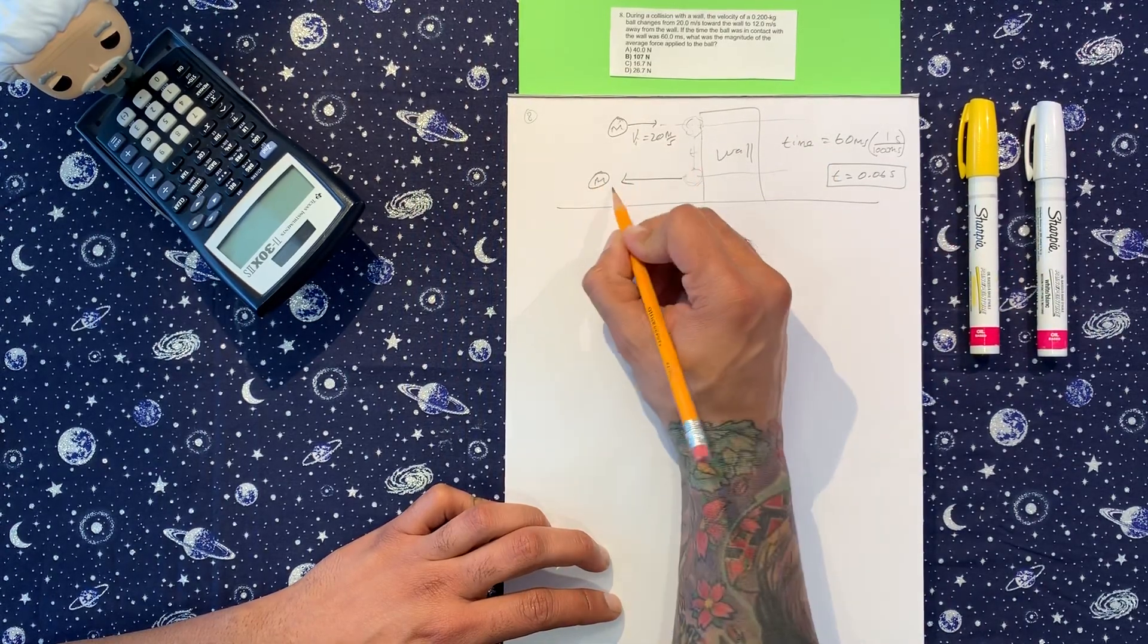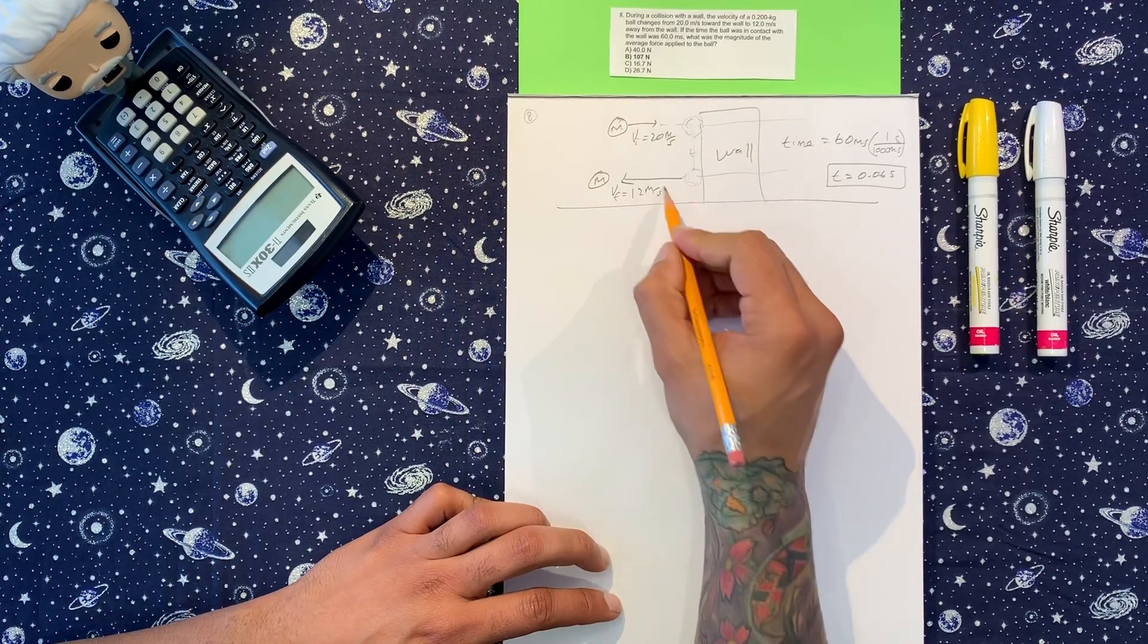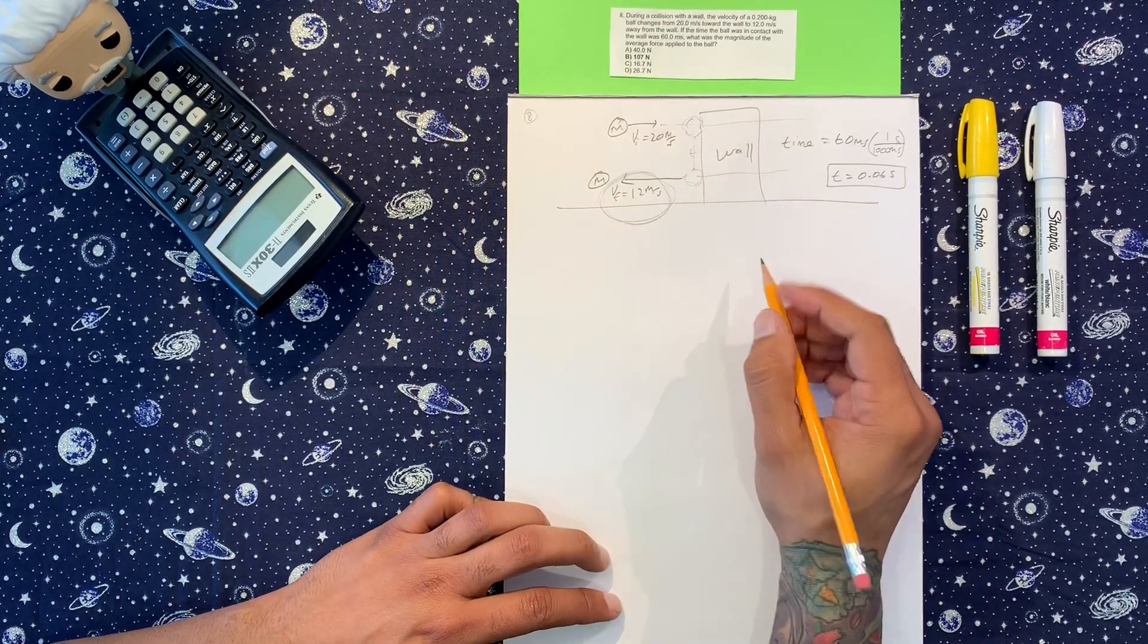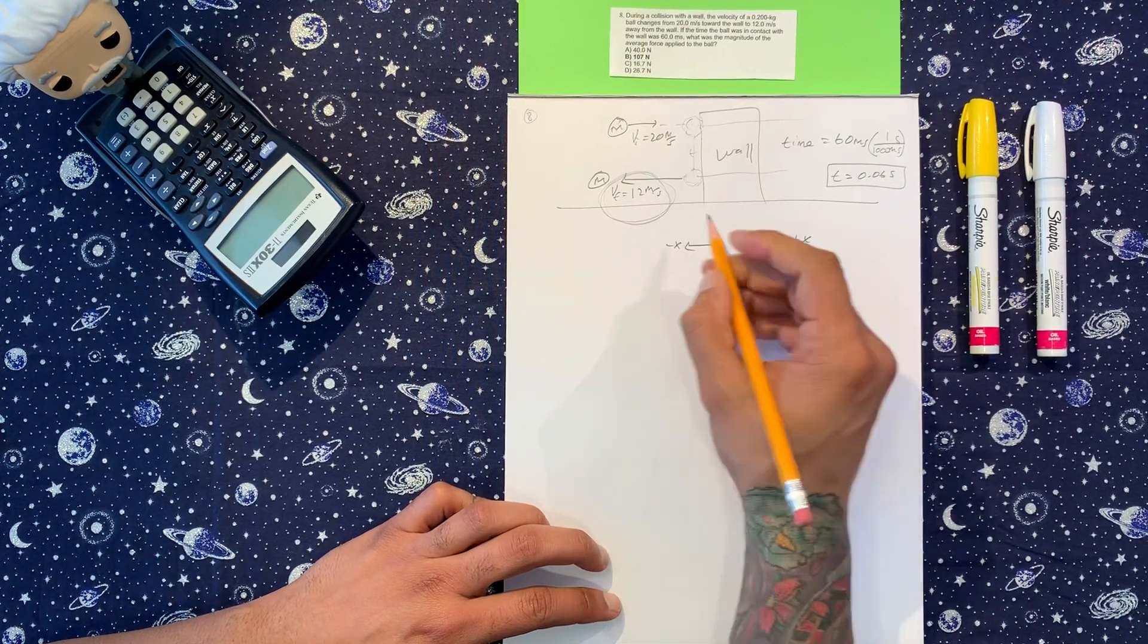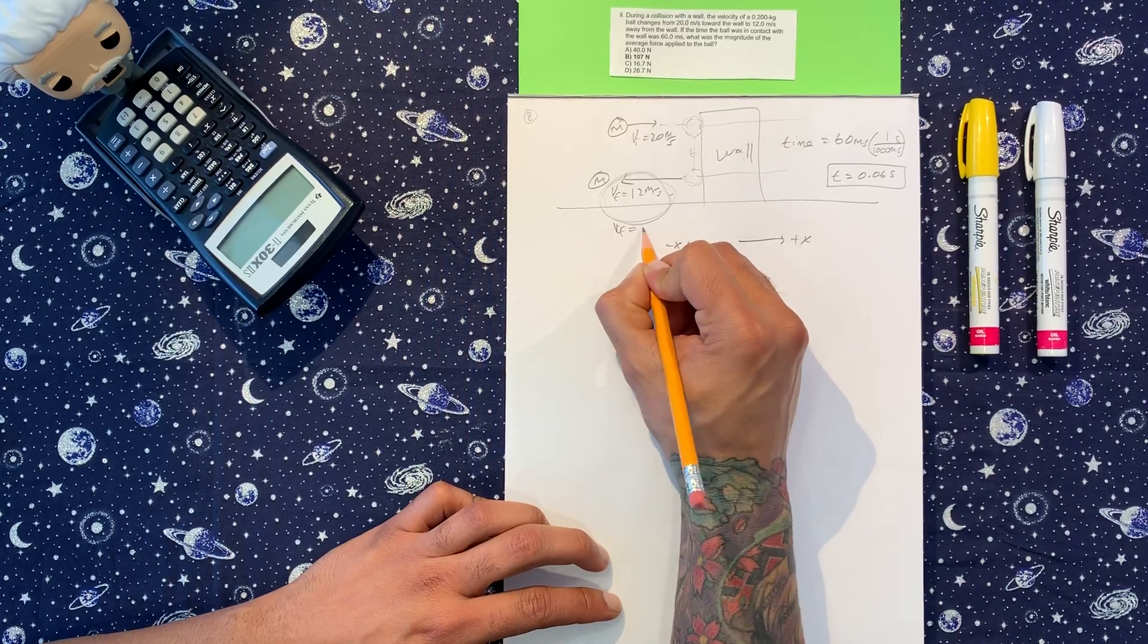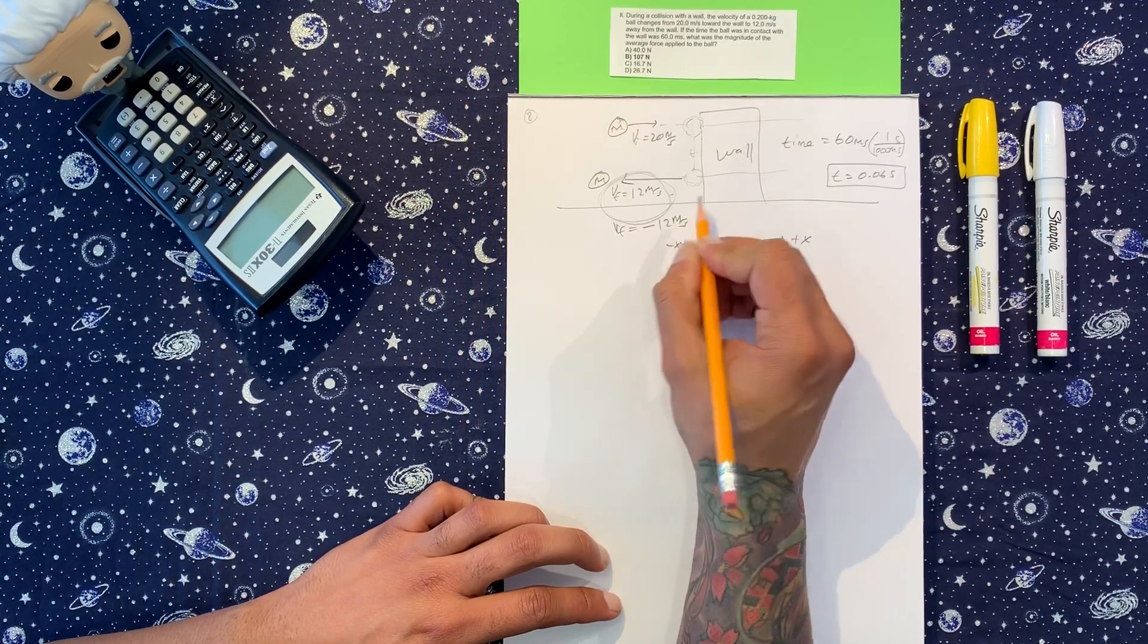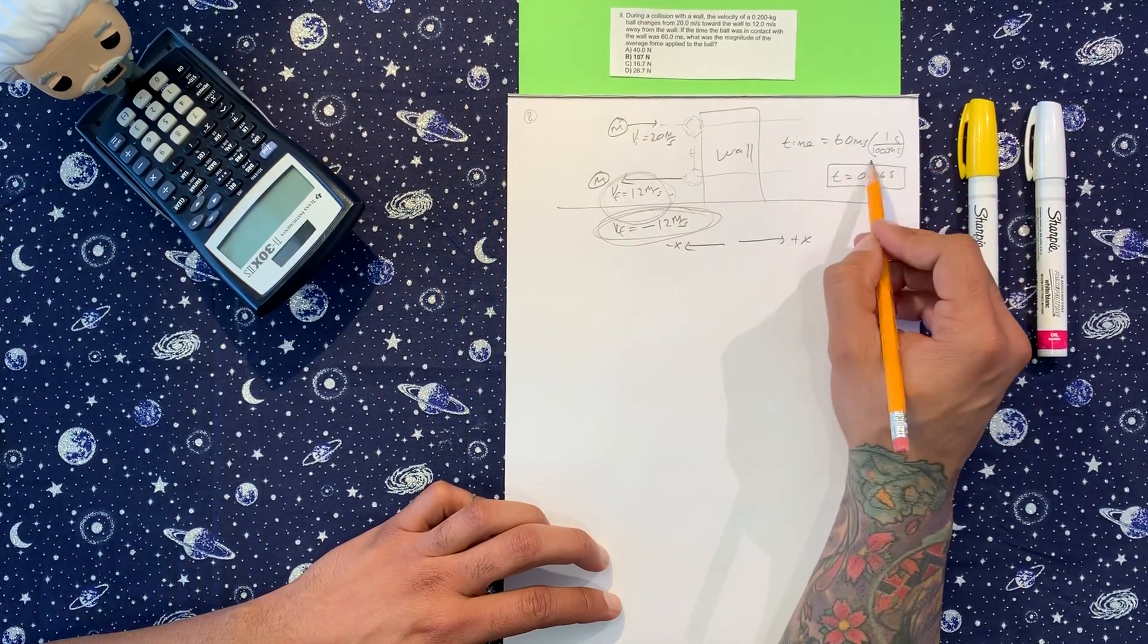Now this is velocity final and it's 12 meters per second, but what they don't tell you is that this direction is positive x, this direction is negative x. So this is actually velocity final is negative 12 meters per second. That's it, a little trick there.